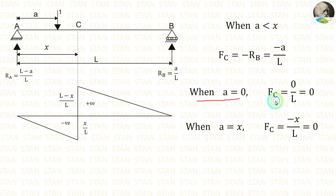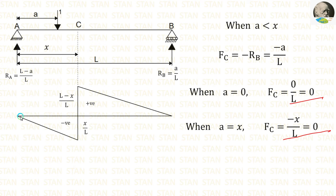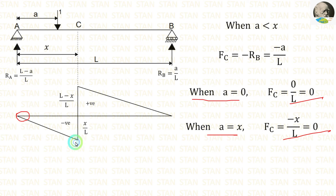When A is equal to 0, the shear force will be 0. When A is equal to X, the shear force will be minus X by L. Using these two values, we can make the first triangle. When A is equal to 0, the shear force is 0; when A is equal to X, the shear force is X by L. So we have made two points, then we connect them. And we have made the influence line diagram for negative shear force.